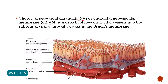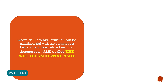The CNVM is nothing but a growth of new vessels which are coming from the choroidal area and then entering into the retina through a break in the Bruch's membrane and then through the retinal pigment epithelium. The commonest cause of the choroidal neovascularization is actually the age-related macular degeneration, and when it occurs with AMD it is called the wet AMD or the exudative AMD.